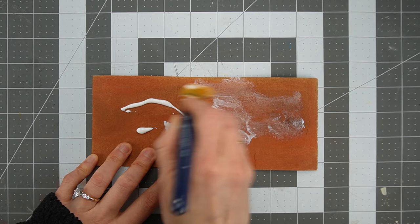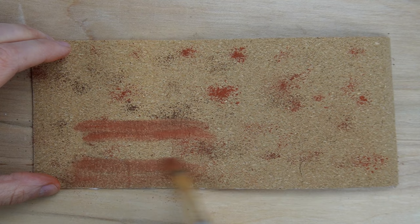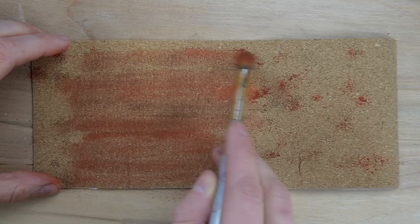For the second shade of bricks, I added some brown and left more of the cork showing. To create some variation within the same piece, I added some areas of heavier red and heavier brown.